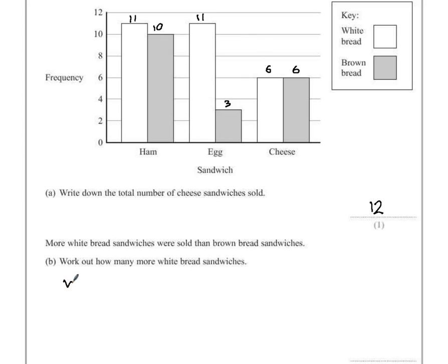We'll start off with white. So we have 11, add 11, add 6. So 11 add 11 is 22, add 6 means there are 28 white sandwiches sold.